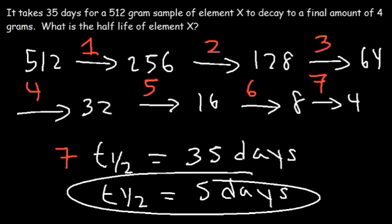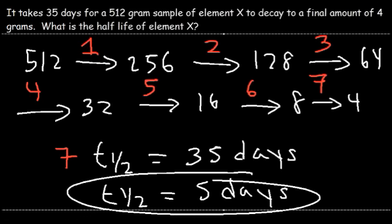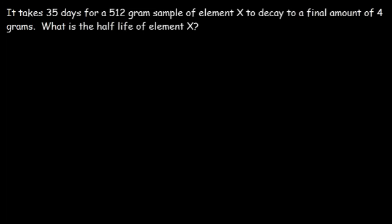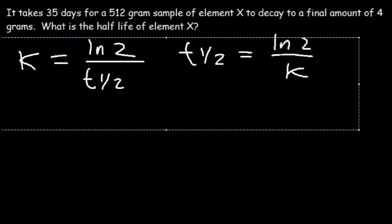Now let's use the equations to solve for the half-life. To calculate the half-life we need the rate constant K first. Since K = ln(2) / half-life, rearranging gives half-life = ln(2) / K. So let's solve for K first.